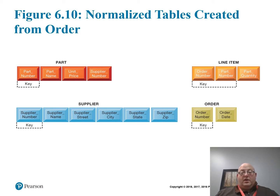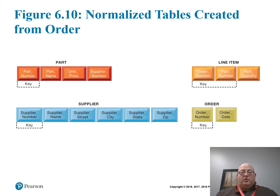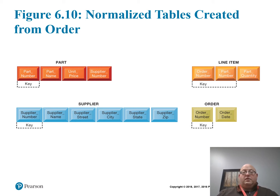We break it down further through normalization phases: first normal form, second normal form, third normal form. Boyce-Codd normal form is a special type of 3NF. Now we have four tables: supplier with a primary key of supplier number; part with part number as primary key; order with order number as primary key; and a line item table that requires two items joined together to maintain uniqueness — this is called a composite key.